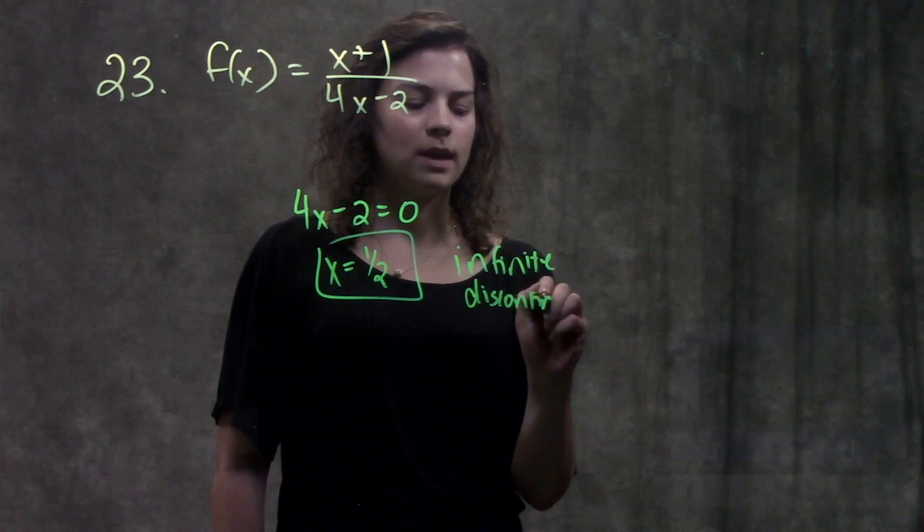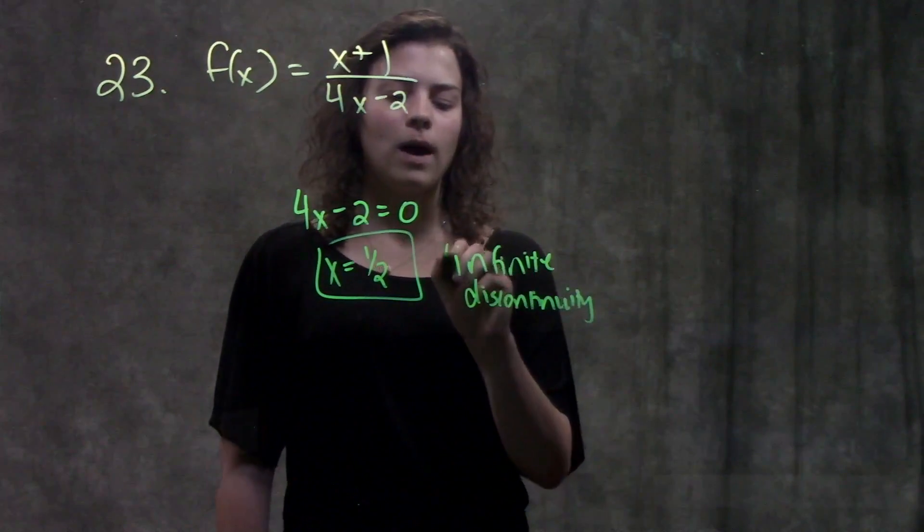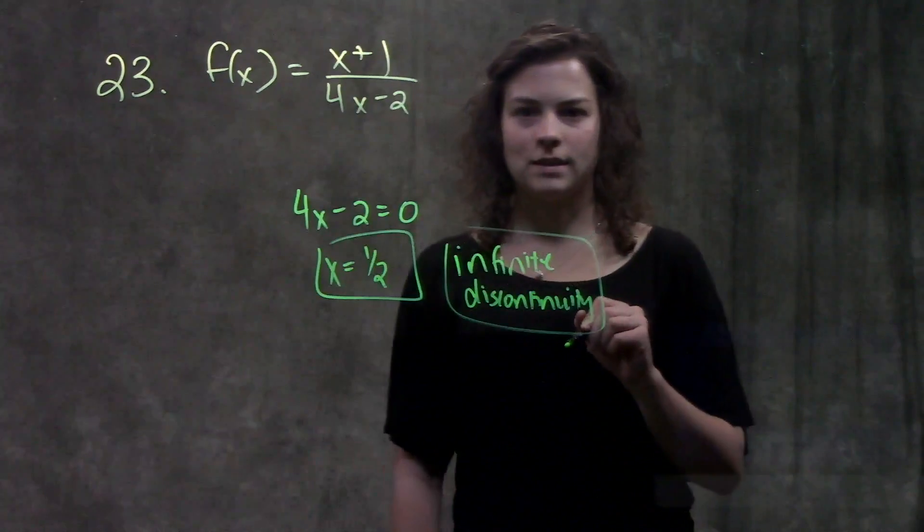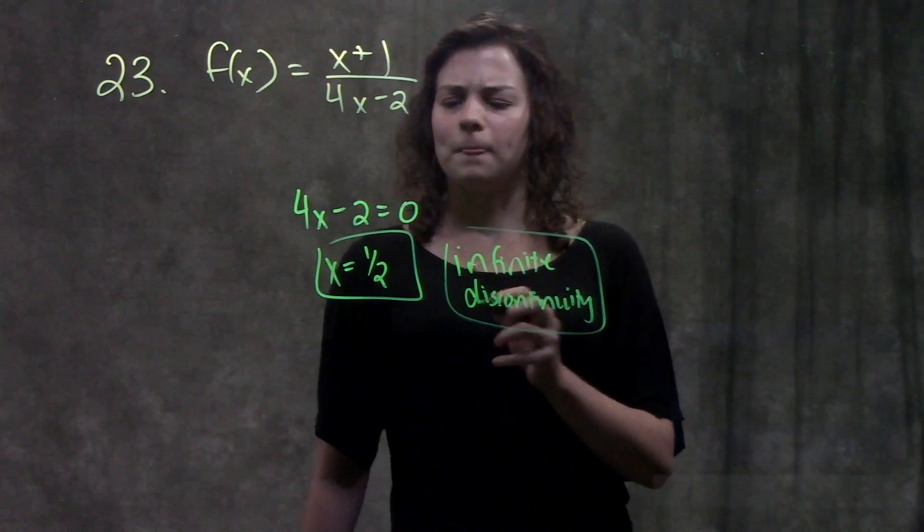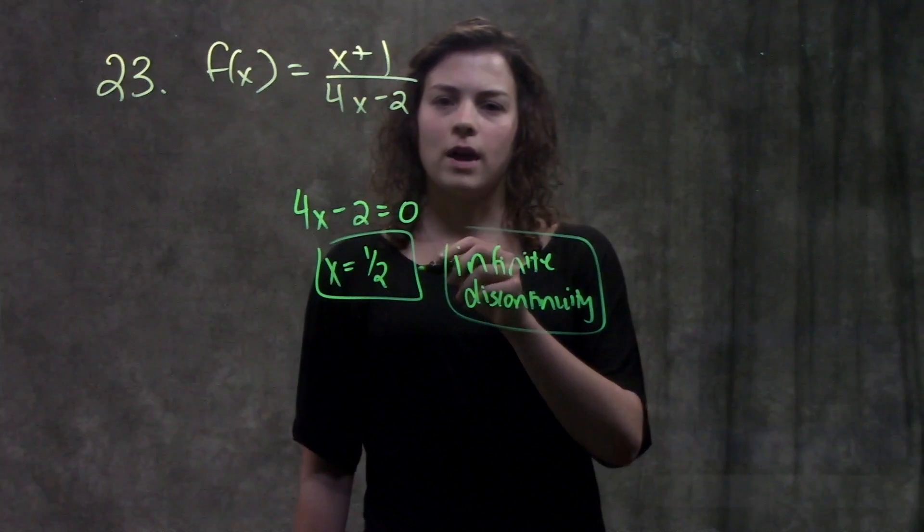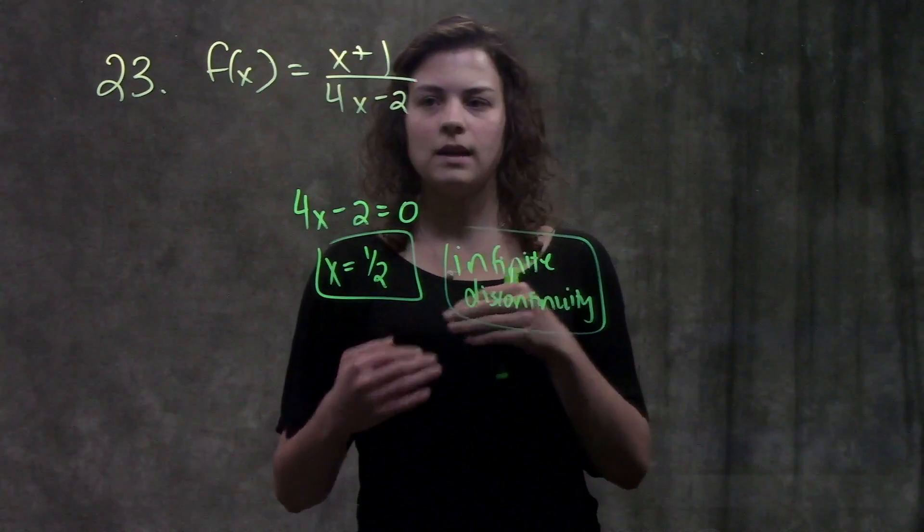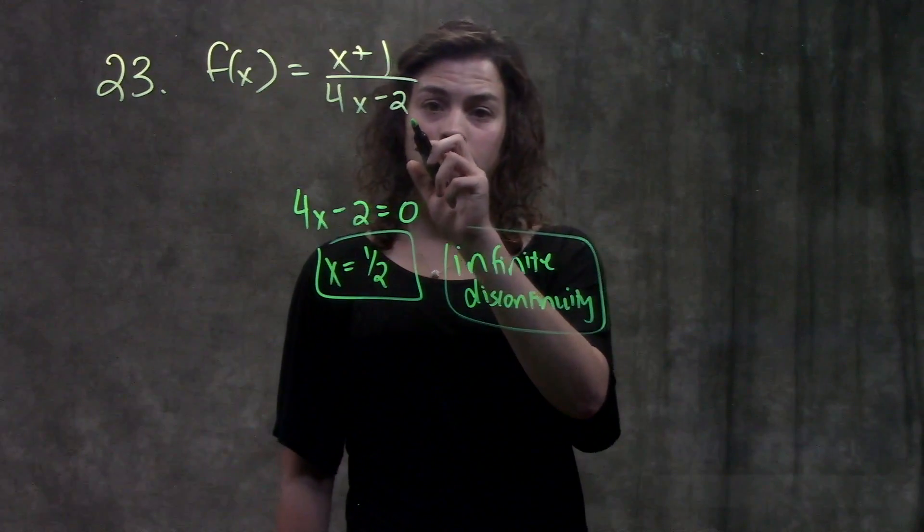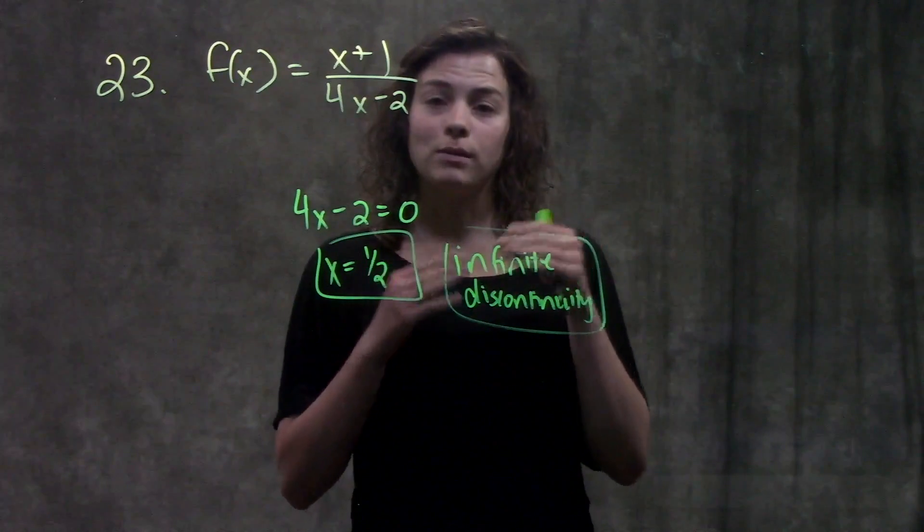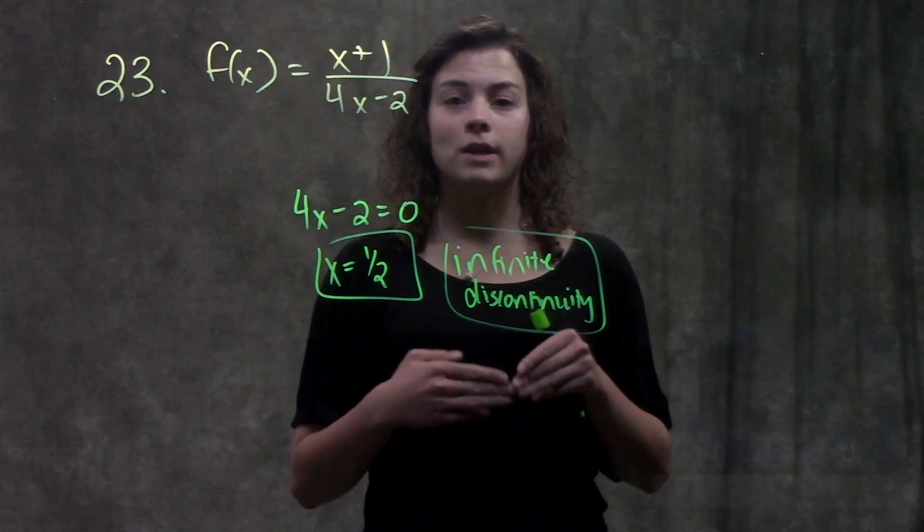And if you want to think of why this makes sense, why it's an infinite discontinuity, let's think about it. As x is getting closer and closer to 1 half from both the right and the left side, this value is getting closer and closer to zero. It's going to become a really, really small decimal, either positive or negative.